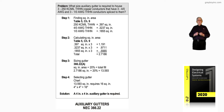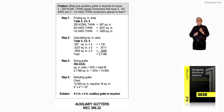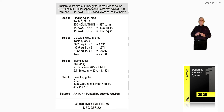Step two: we have to multiply those square inch areas for each size conductor by the number — there happens to be three for each one. So when we do the math from the cross-sectional areas selected from Table 5, Chapter 9, and total them, we come up with 2.7186 square inches, as seen in the quick calc.